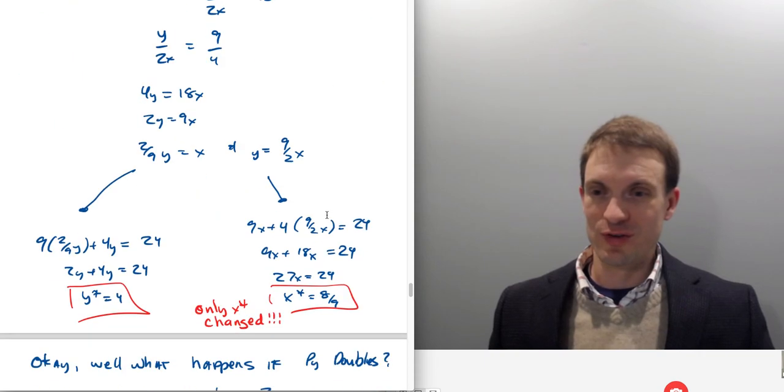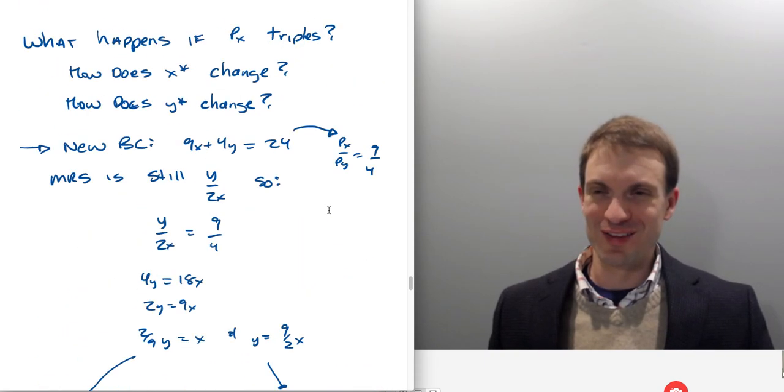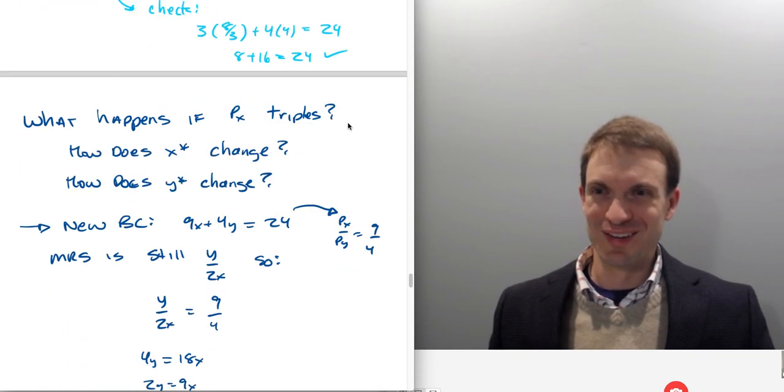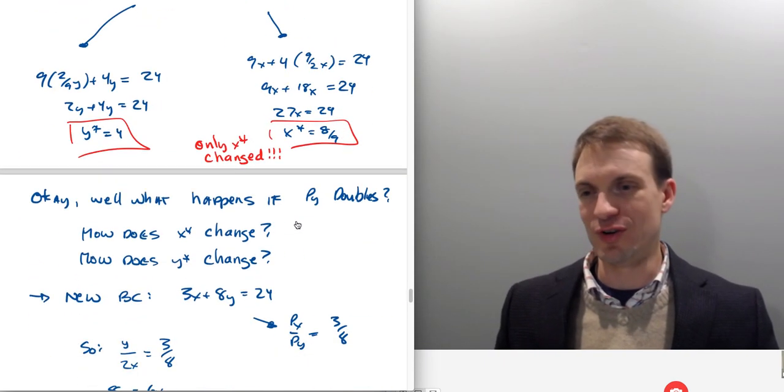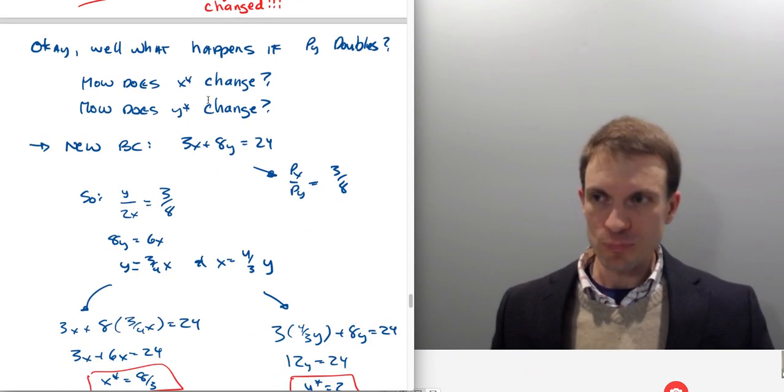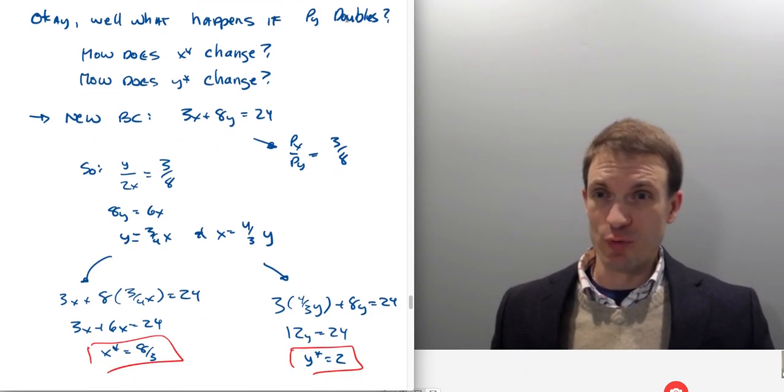So here was our demand for Y, 4. Here's our demand for Y again, 4. What changed? Just our demand for X. It went from 8/3 to 8/9. That's predictable. So price of good X tripled, 8/3 to 8/9. There's something suggestive there. So sure enough, we'll learn about that in a second.